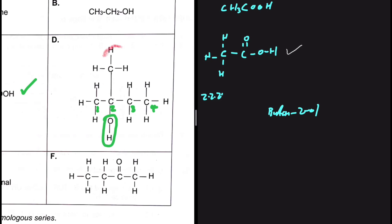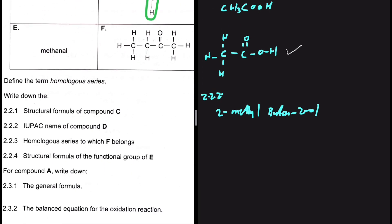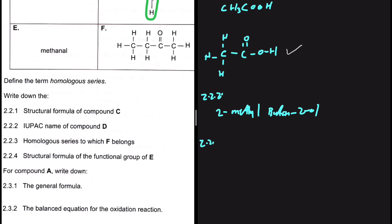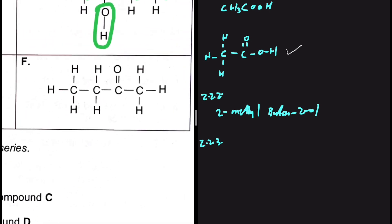There is a branch on the second carbon, so that gives us 2-methylbutan-2-ol — 'methyl' because the branch has only one carbon. This is the IUPAC name of compound D: 2-methylbutan-2-ol.